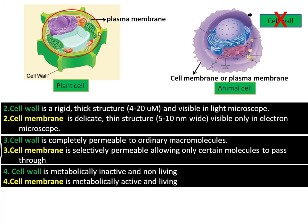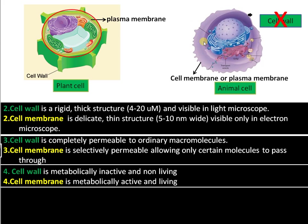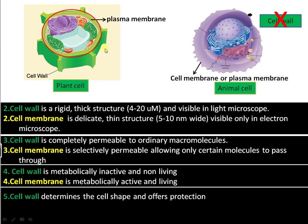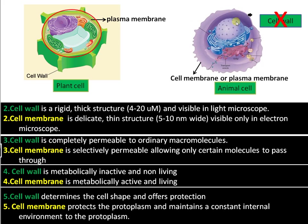The fourth difference is that cell wall is metabolically inactive and non-living, whereas cell membrane is metabolically active and living, controlling the movement of molecules across the cell membrane. The function of cell wall is protection and also determining the shape of the cell. Cell membrane protects the protoplasm, maintains an internal environment unique to that particular type of cell, and allows only certain molecules to enter while preventing all others from entry.